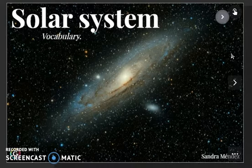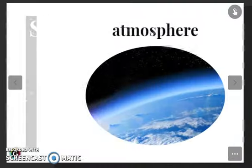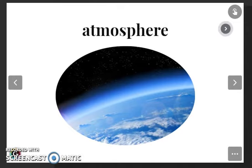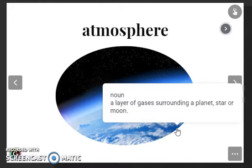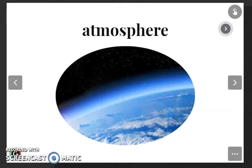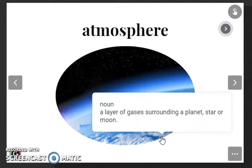Our first word is atmosphere. Listen and repeat: atmosphere. Now let's check the definition. It's a layer of gases surrounding a planet, star, or moon. And here you have it, it's very, very thin.